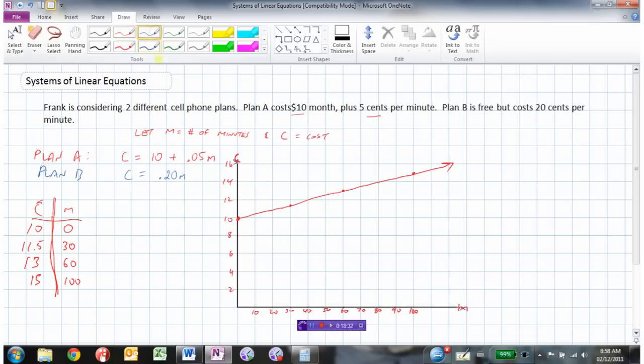Plan B. Let's do a table of values for that. We'll pick the same points. So if you talk for 0 minutes, the cost will be 0. If you talk for 30 minutes, the cost will be $6. If you talk for 60 minutes, the cost will be $12. If you talk for 100 minutes, the cost will be $20.